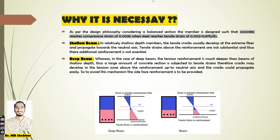In a relatively lower depth beam, tensile strains above the reinforcement are not substantially high enough to create cracks in the concrete, and additional reinforcement is not essential in this case. This tensile strain is not very sufficient to produce cracks in the concrete that lies between the neutral axis and the reinforcement.